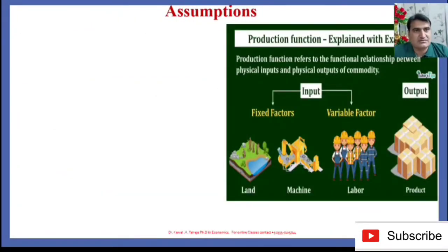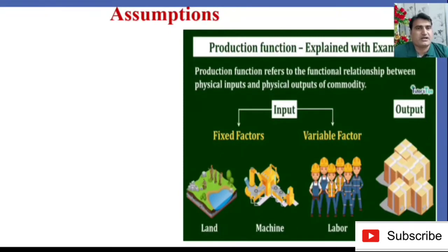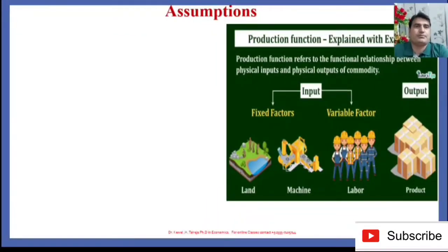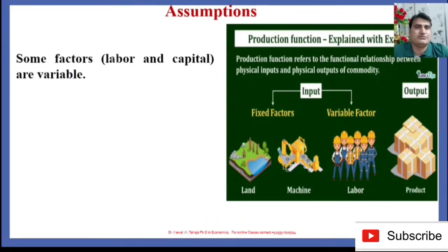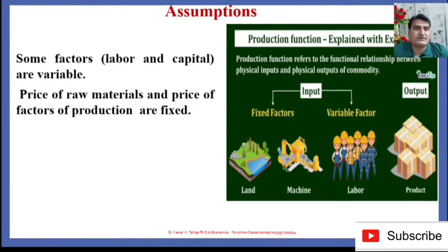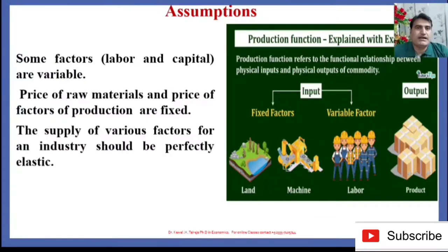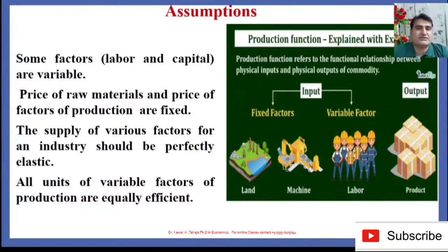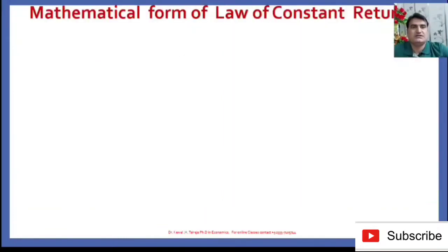What are the assumptions on the basis of which the law of constant returns to scale functions? The product is the combined effort of factors of production: land, machine, and labor. The production function explains the relationship between input and output. To prove the law of constant returns, it is assumed that some factors are variable, the prices of raw material and factor of production are fixed, the supply of various factors for an industry should be perfectly elastic, and all units of variable factors of production are equally efficient.